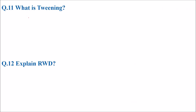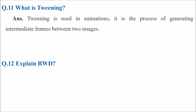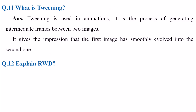A pseudo-class applies CSS on a class which does not exist in real — like hovering: if you hover, it colors red, otherwise not. What is tweening? Tweening is used in animations — it is the process of generating intermediate frames, giving the impression that the first image has smoothly evolved into the second one. In CSS3 there is a very good feature called gradient, where you can feel the opacity and transparency change.